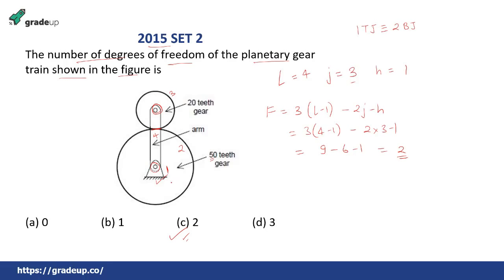So the degree of freedom is 2. What are those two degrees of freedom or two inputs required for constrained motion? One is the motion of this gear, also known as the sun gear in case of a planetary gear train, and the second input is the arm. Those two inputs define the degree of freedom which is equal to 2.